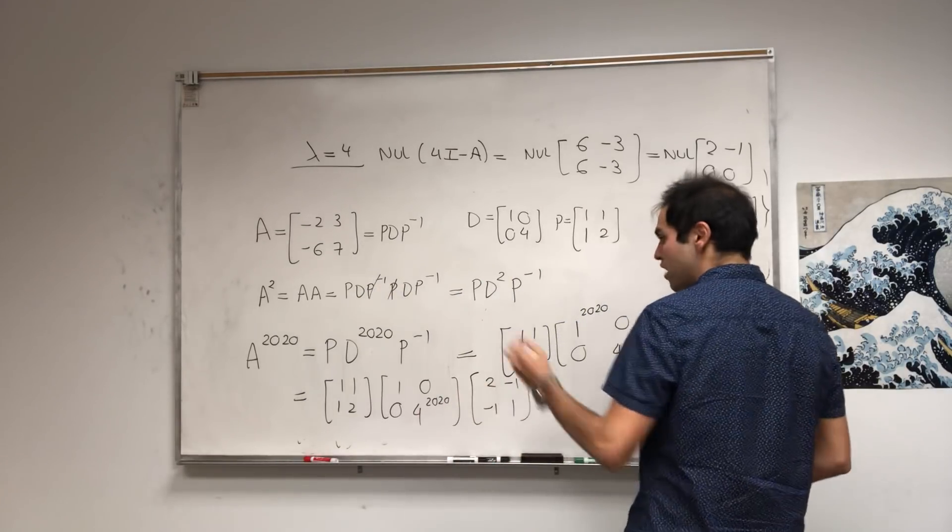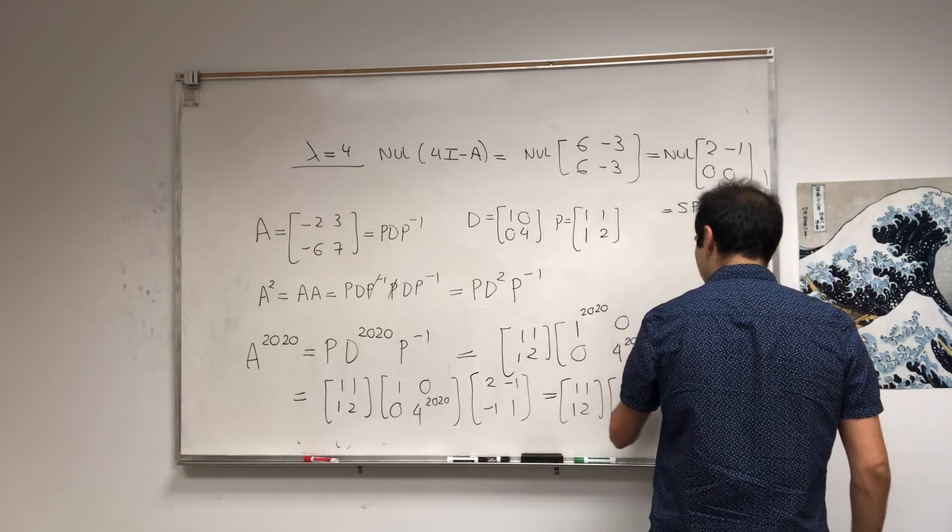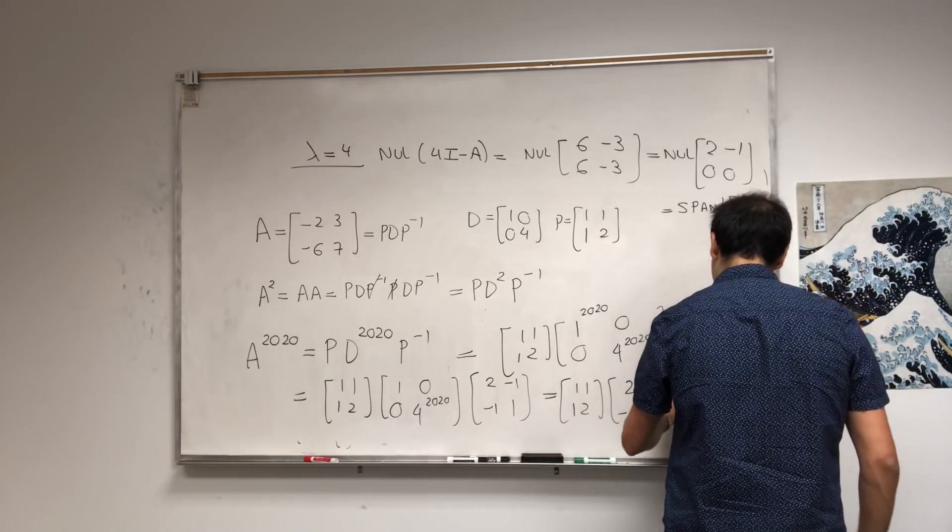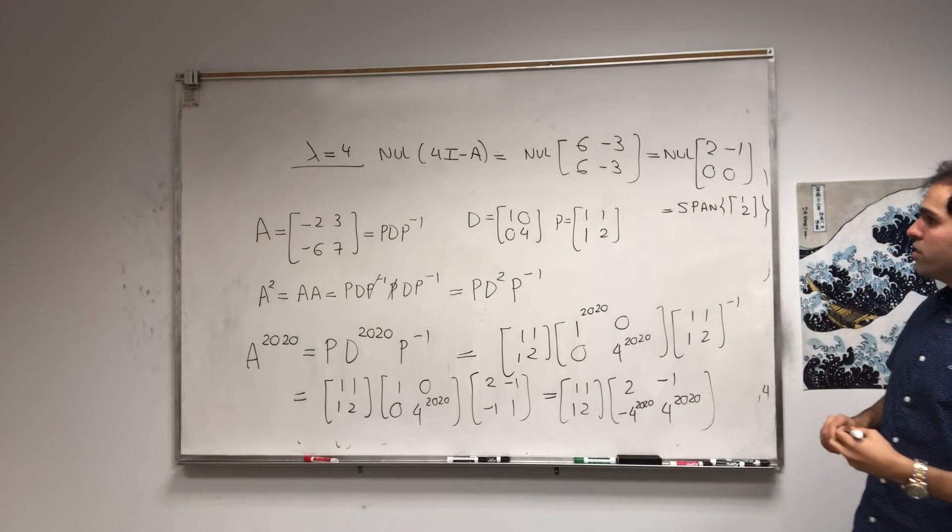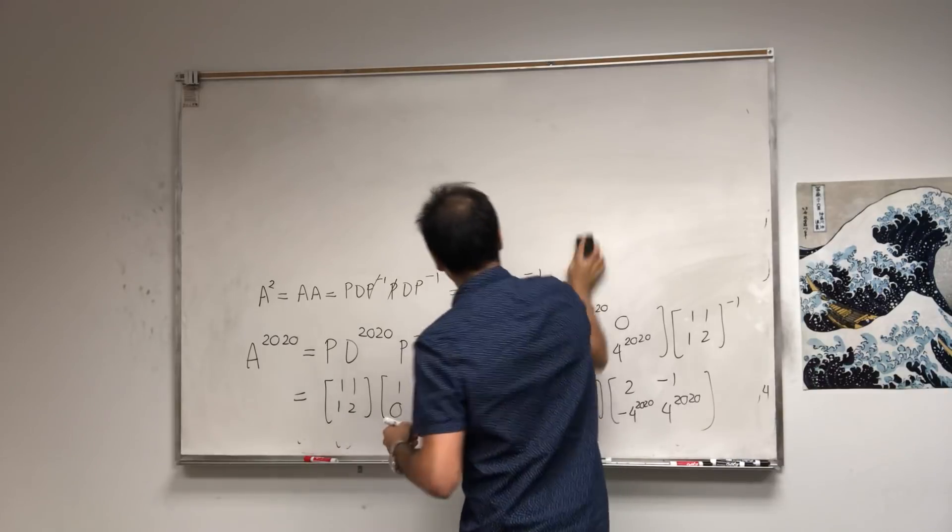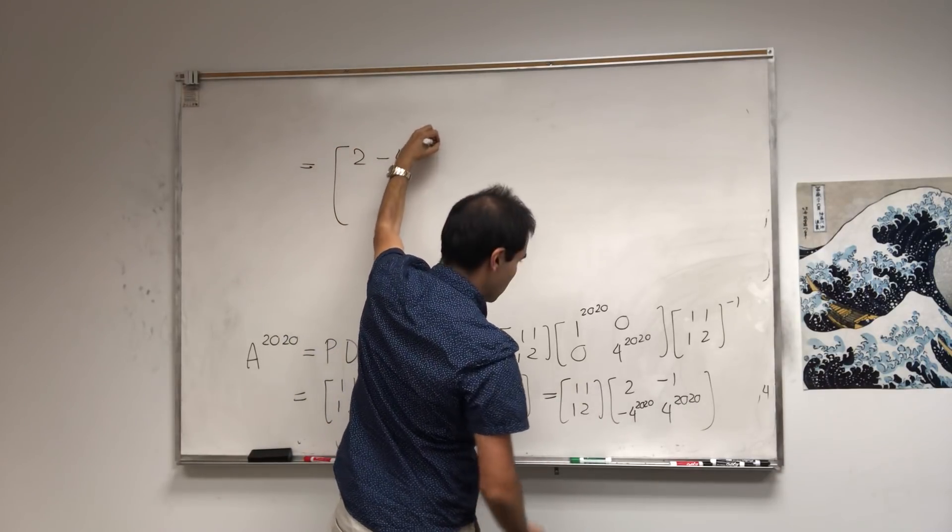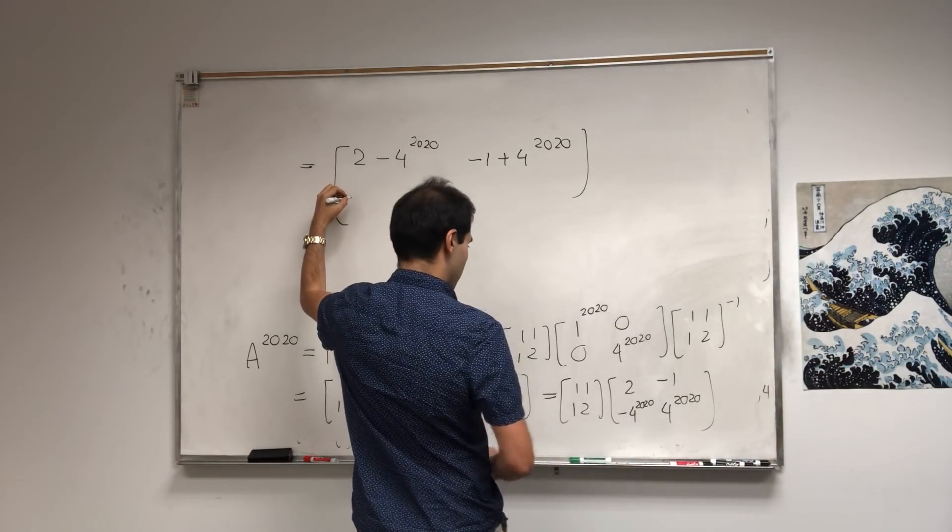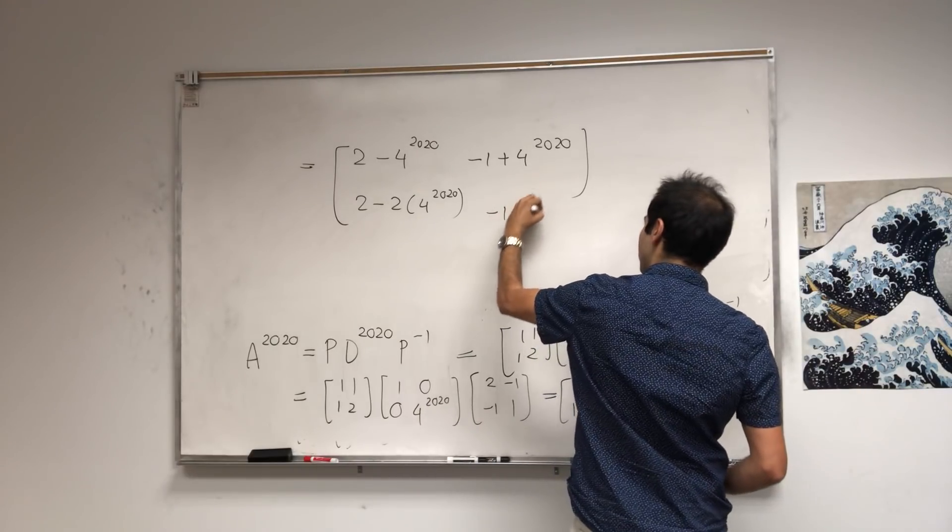This is amazing, because now all you have to do is multiply everything. So [1, 1; 1, 2] times the first row becomes [2-1, -1; minus 4^2020]. We just have to multiply this out. That becomes [2-4^2020, -1+4^2020; 2-2×4^2020, -1+2×4^2020].